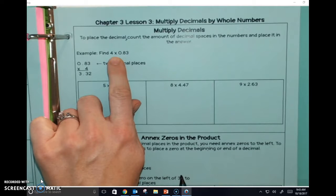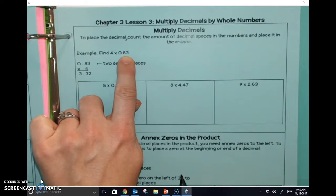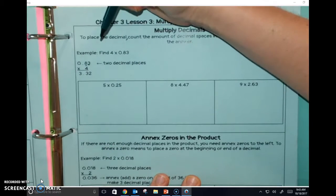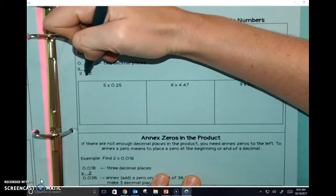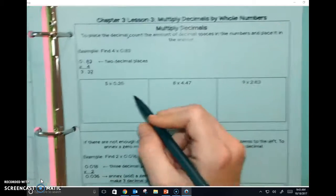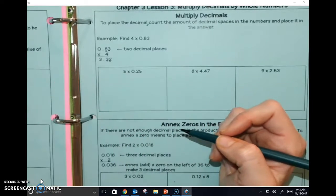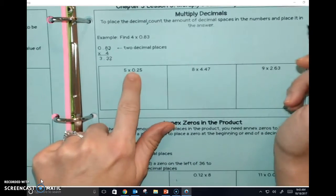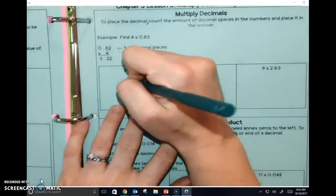So we have 4 times 0.83. Do you see how there's one, two decimal places here? Yes. So there have to be two decimal places down here. Please stop that, Dalton. Okay, so our first one. In multiplication, does it matter what number goes on top? No. So I'm always going to go with my longest number on top.